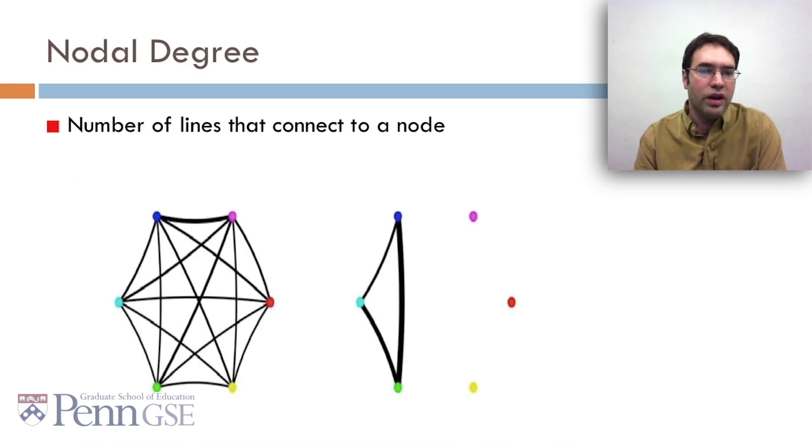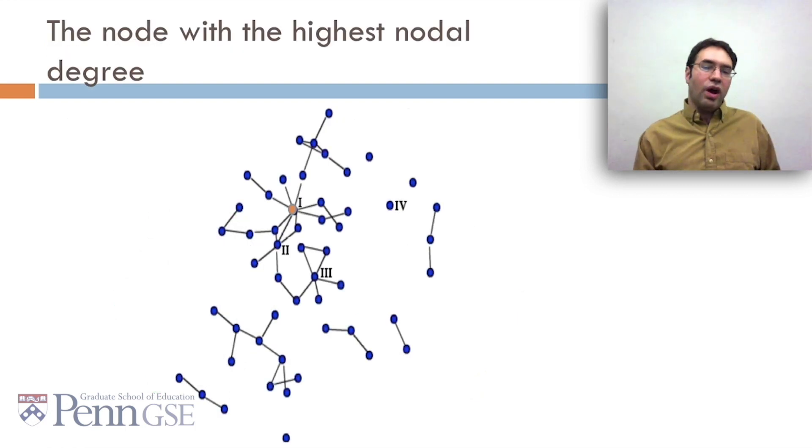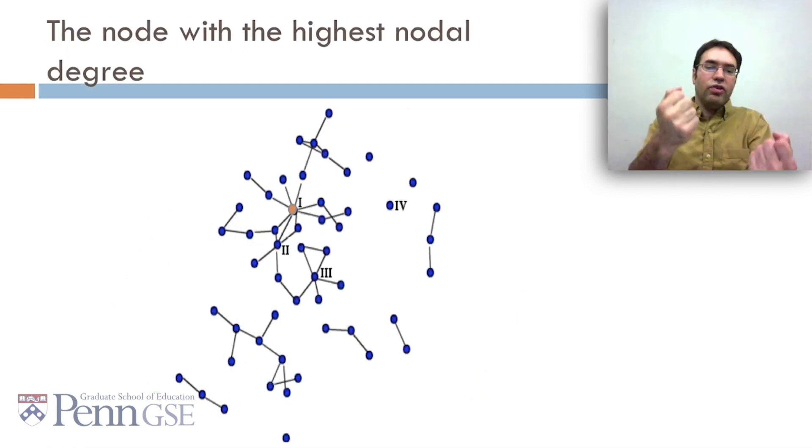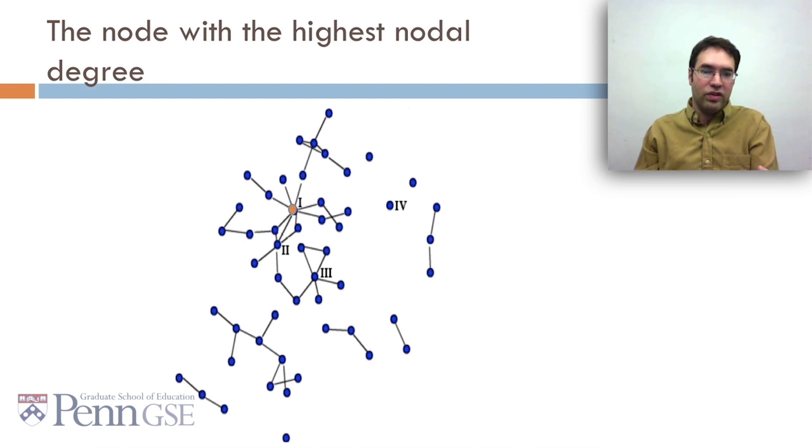The first one is nodal degree, which is the number of lines that connect to a node. So, all the nodes on the left graph have nodal degree of five. And on the right graph, the blue, cyan, and green have nodal degree of two, whereas the pink, red, and orange, yellow, have nodal degree of zero. In this example, Dawson's example, this very central node is actually the one with the most connections. It's got one, two, three, four, five, six, seven, eight.